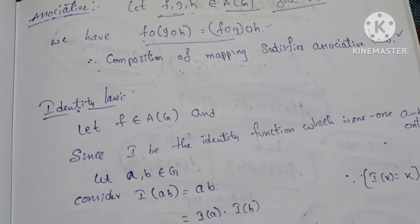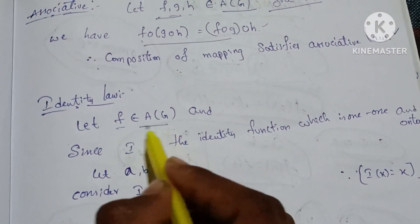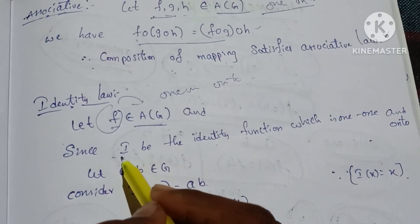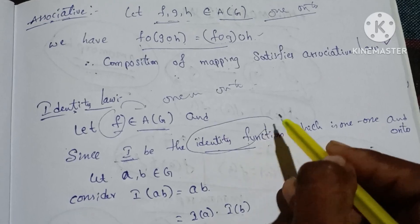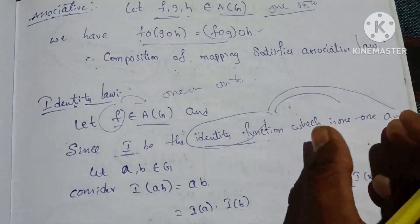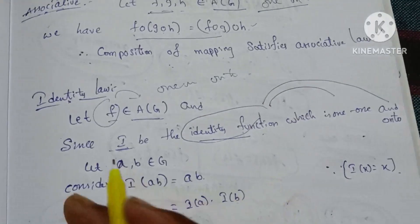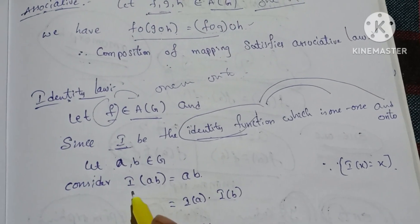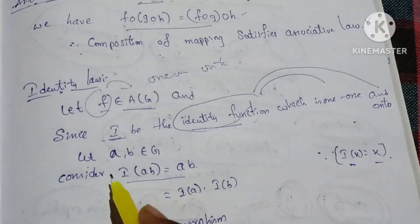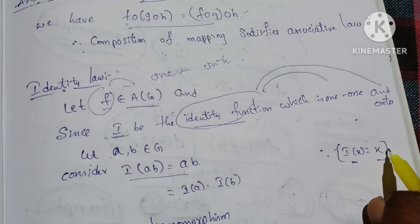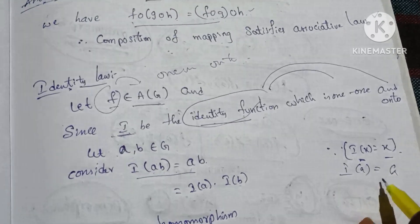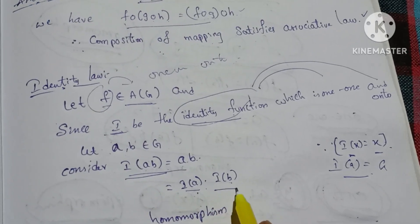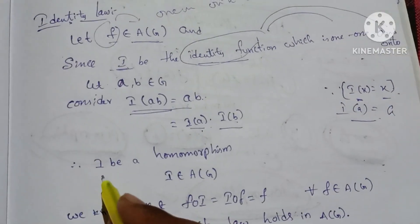The third condition is identity. Let one function show that F belongs to A(G). I will get the identity function I. The identity function I is one-one and onto. So let's prove I is a homomorphism. Let a, b belong to G. Consider I(a·b) = a·b. Since I(x) = x, I(a·b) = a·b = I(a)·I(b). Therefore I is a homomorphism. Since I is one-one, onto, and a homomorphism, I belongs to A(G), and it is an automorphism.